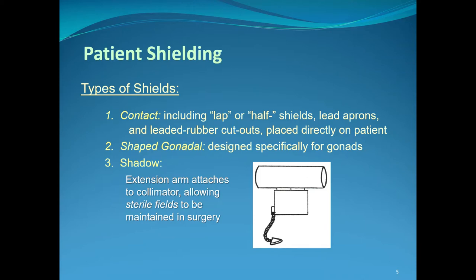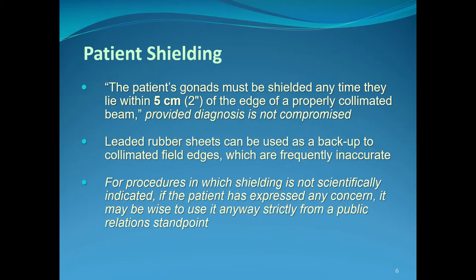When should we shield the gonads? The NCRP recommendations — adopted by the ARRT and subsequently by national and state radiation associations, as well as local organizations and medical offices — state that the patient's gonads must be shielded any time they lie within five centimeters, that's two inches, of the edge of a properly collimated beam, unless covering that area would hide information that could aid in the diagnosis.